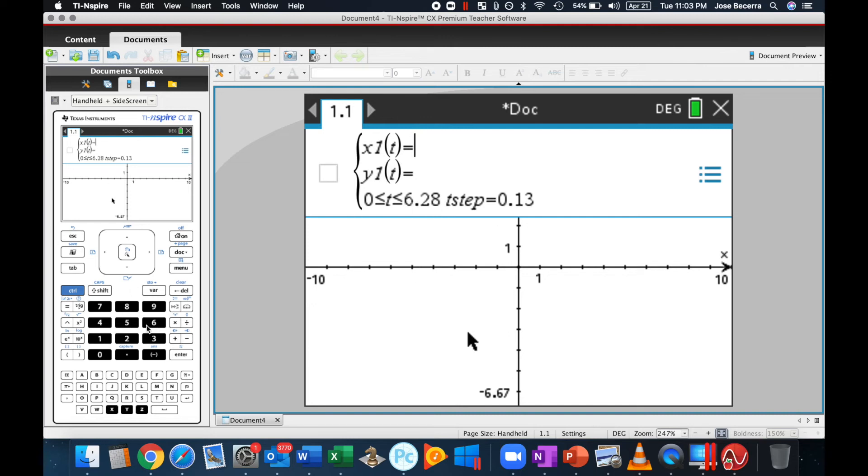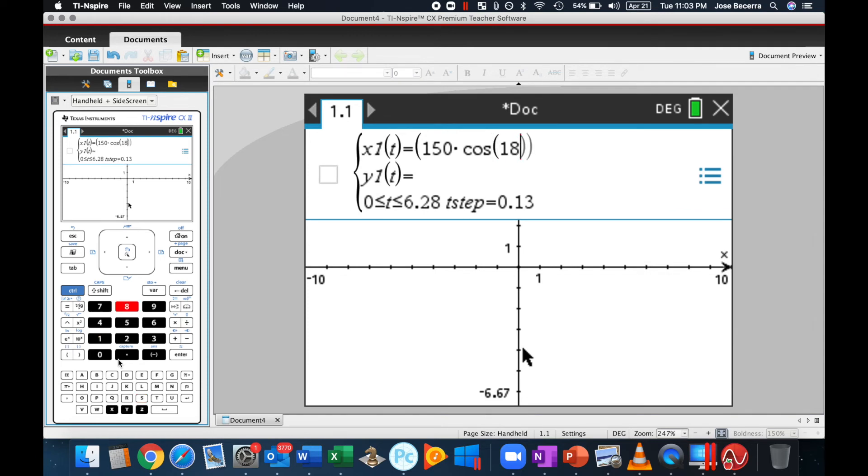Let's go ahead and plug this in. My value for x is going to be, in parentheses, 150 times the cosine of 18. And we're making sure that we're in degree mode right here. That's going to be very important. All of this times t, because we have time in seconds.